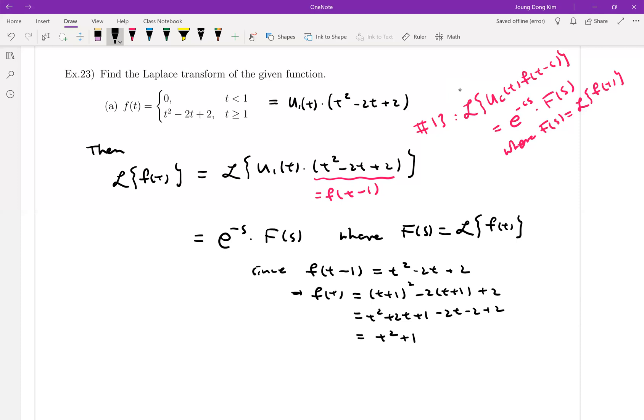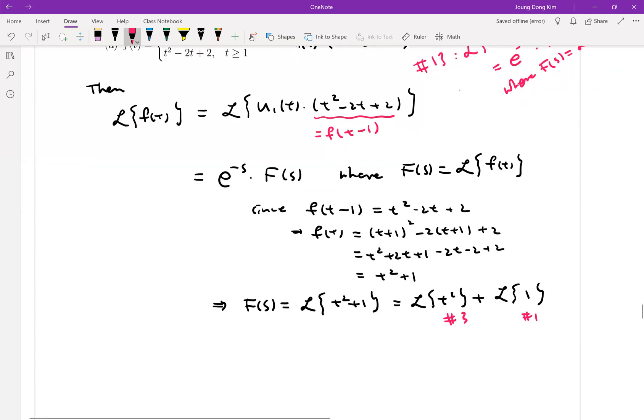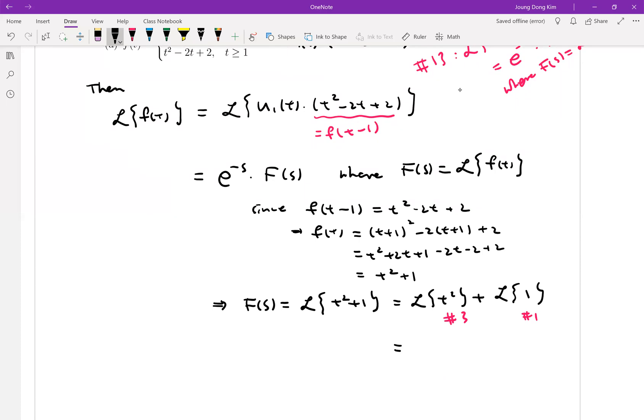Is it okay? So then your f(s) which is Laplace transform of t squared plus 1, is equal to Laplace transform of t squared plus Laplace transform of 1. And since this is linear, and do you remember this one is look at table, it is number 3 and this is number 1.